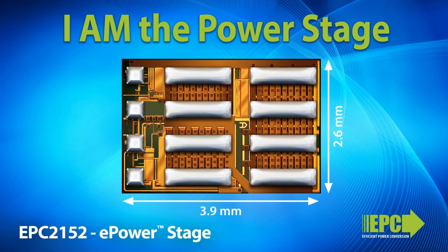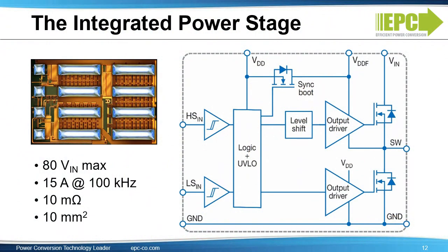Since GAN is a lateral device, it's very easy to integrate solutions beyond discrete devices. Here is a new addition to our family: a fully integrated power stage in a super small size. The E-power stage — digital in and power out — family simplifies design and will further reduce size. The device is very small, only 10 square millimeters, and integrates drivers, level shifter, half-bridge FETs, and bootstrap. The maximum input voltage is 80 volts, and the maximum current at 100 kilohertz is 15 amperes.